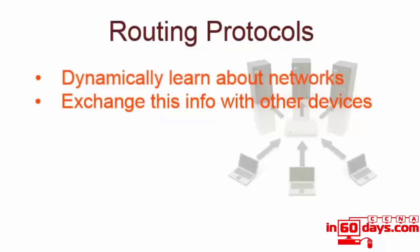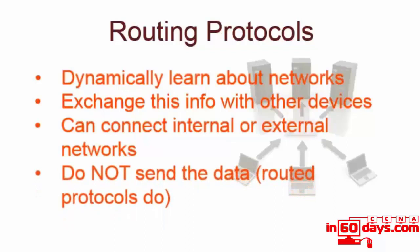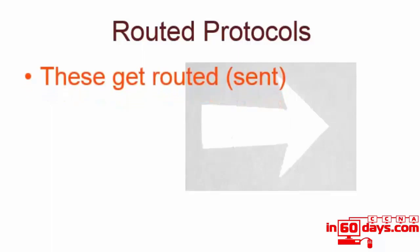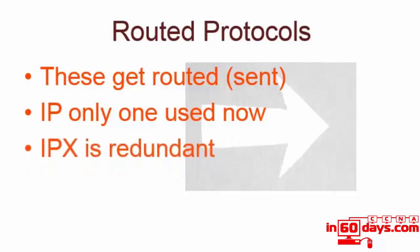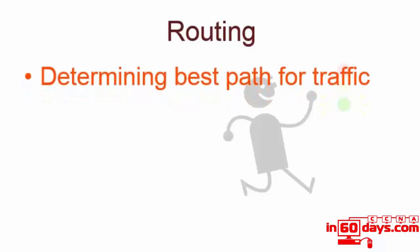The idea is to exchange information - however the protocol works, each protocol works in a different way, a different format. They'll exchange information with other devices on the network. Depending on the protocol, the routing protocol will exchange information internally with other devices or it will swap information about external networks. Routing protocols do not send the data - they determine the best path for the data to go. Routed protocols are actually responsible for sending the data. IP is the only one we need be concerned with.